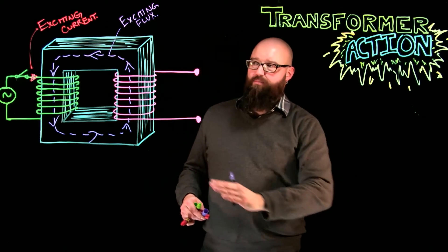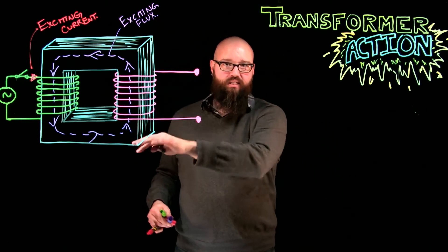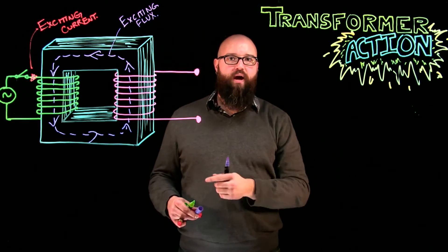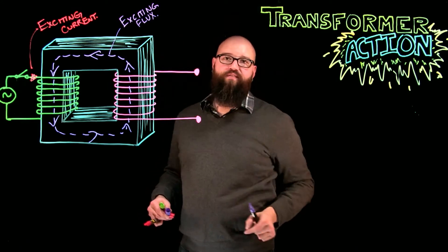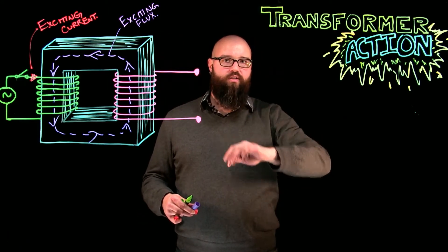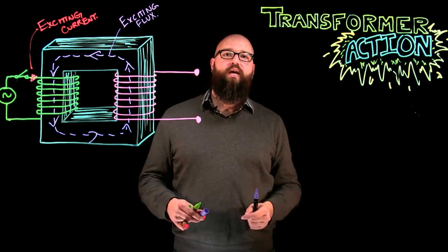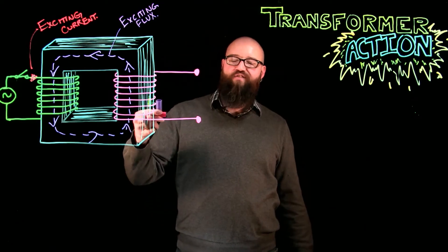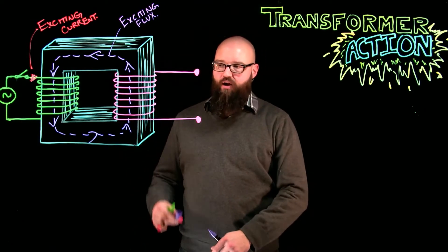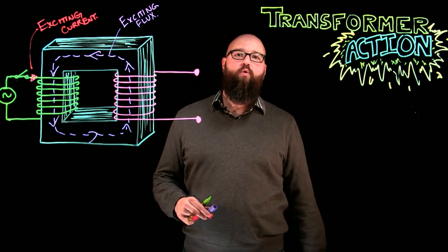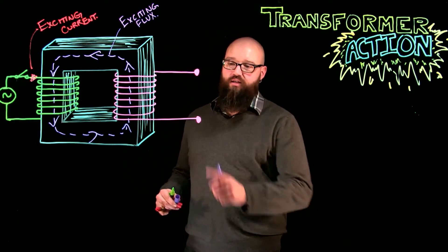Now, we have an exciting current, which has set up an exciting flux. The other thing that happens, though, is now, because it's AC, it's constantly changing. It's flipping back and forth. This exciting flux is always changing directions. We have a growing and shrinking, moving magnetic field. And what it's doing right now is interacting with the coil on the secondary. This coil,